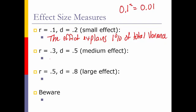So, very, very small effect. All right, the next one. The effect explains 9% of the total variance. Medium effect. 0.5 or greater. The effect explains 25% of the variability.